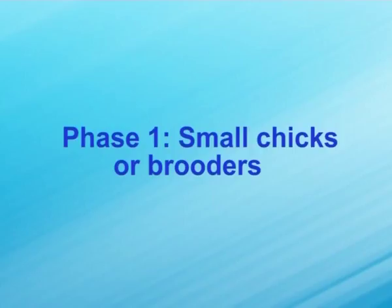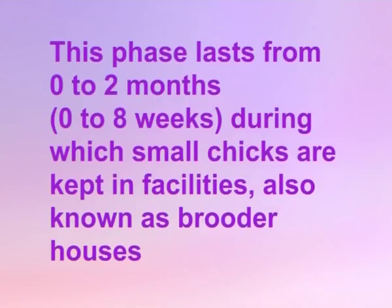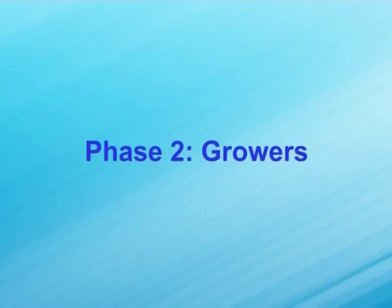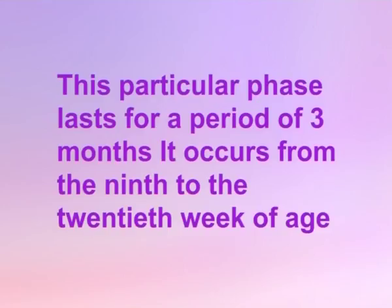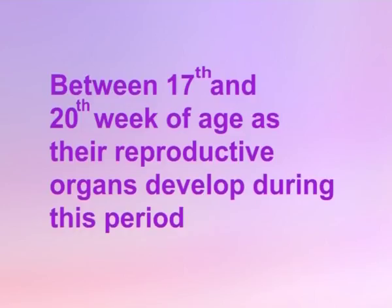Phase 1 — small chicks or brooders: this phase lasts from 0 to 2 months, that is 0 to 8 weeks, during which small chicks are kept in facilities also known as brooder houses. They are kept separately from the laying birds. Phase 2 — growers: this phase lasts for a period of 3 months, from the 9th to the 20th week of age. Growers may either be housed separately from small chicks or continue to be raised in brooder-cum-grower houses. It is important to provide appropriate care to the growers, particularly between the 17th and 20th week of age, as their reproductive organs develop during this period.